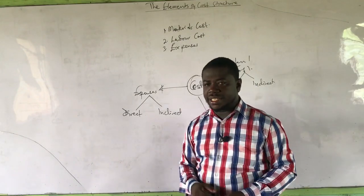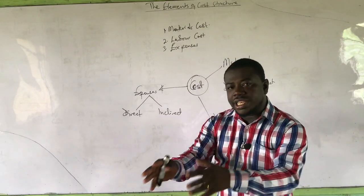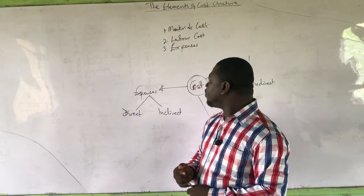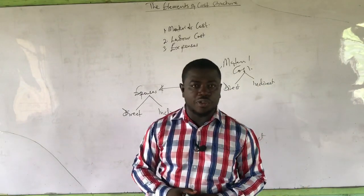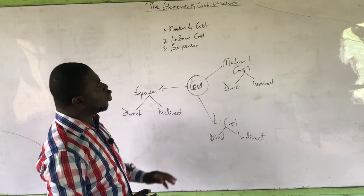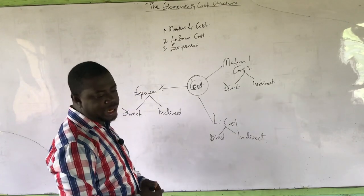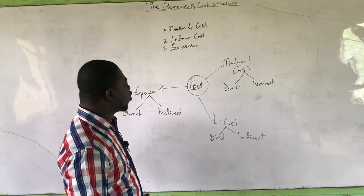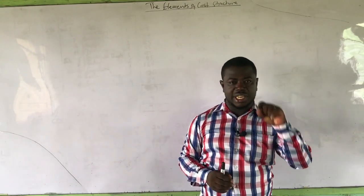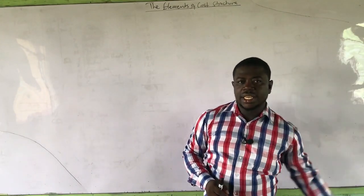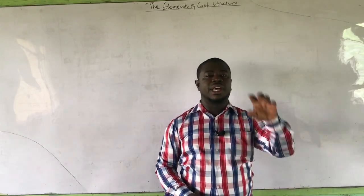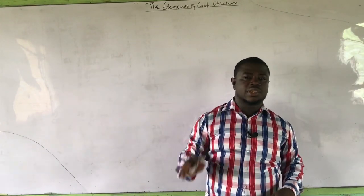Direct expenses are expenses that are traceable to the production process, and indirect expenses are expenses that are not traceable to the production process. For all three main elements of cost — material cost, labour cost, and expenses — we have a direct nature and an indirect nature. All the direct natures summed up are called prime cost, and the indirect costs are called overheads.